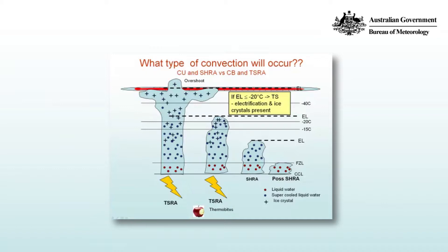For a thunderstorm, you can see that there are various levels. In particular, the equilibrium level is going to be at the tropopause, and you have an overshooting top. The overshooting top is a product of the fact that in a large CAPE environment, parcels of air have momentum to overshoot the equilibrium level — also known as the level of zero buoyancy — and then find themselves in a stable environment and collapse back down.